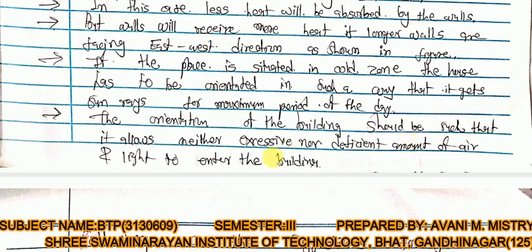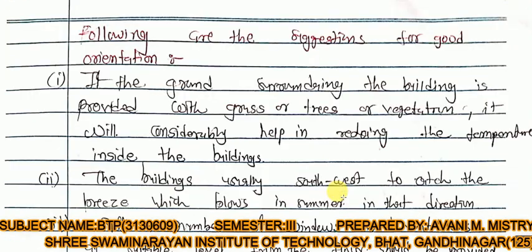The orientation of the building should be such that it allows neither excessive nor deficient amounts of air and light to enter the building. Following are the suggestions for good orientation: if the ground surrounding the building is provided with grass, trees, or vegetation, it will considerably help in reducing the temperature inside the building.